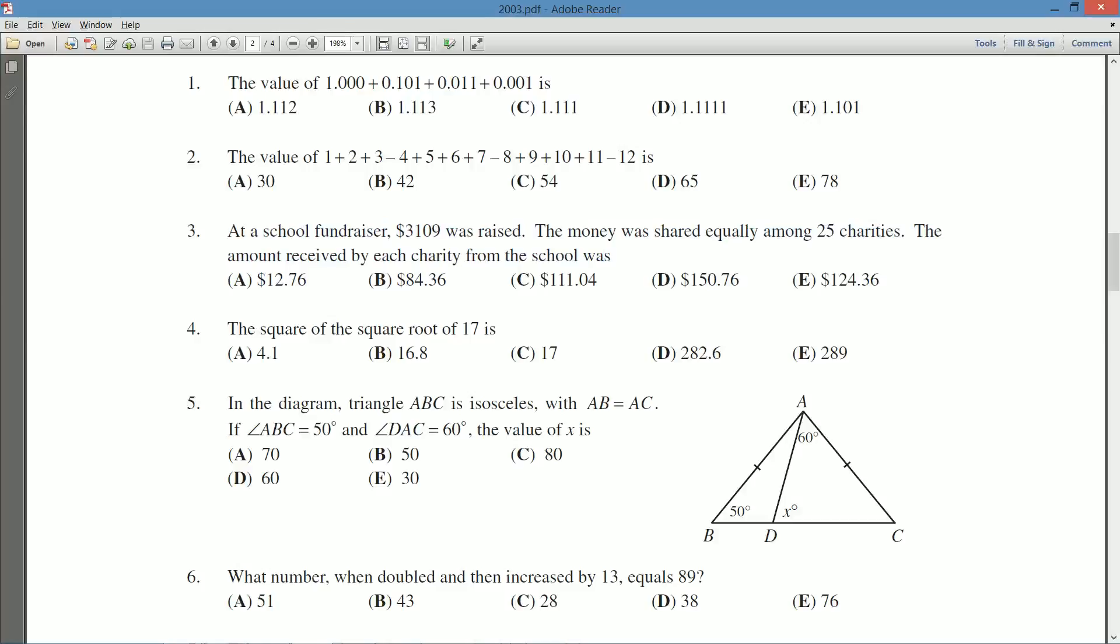Okay. All we really need to do here is divide this money up amongst 25 charities. Now, you can notice pretty quickly this number doesn't end in a 25, 50, 75, or double zero. So it's not going to divide evenly. And our answers do reflect that. But there's nothing else to do except just divide this 3,109 by 25.